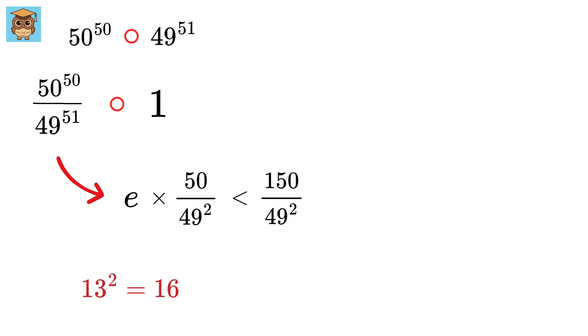We have 13 square as 169, which is greater than 150. So this value will be less than 13 square over 49 square, or 13 over 49 whole square, which is way less than 1. Amazing!